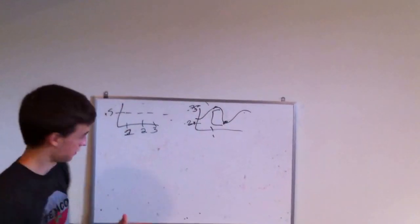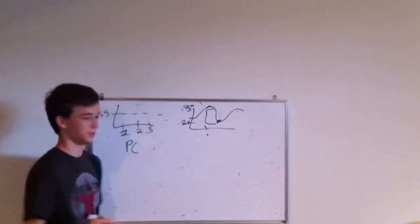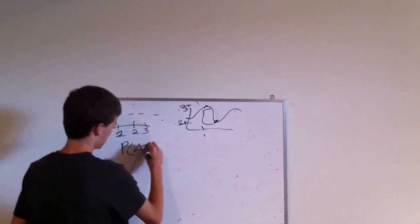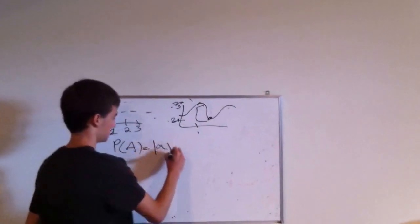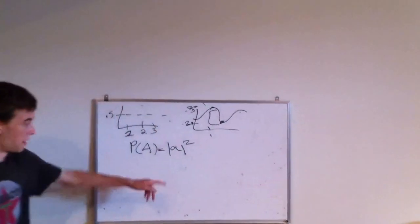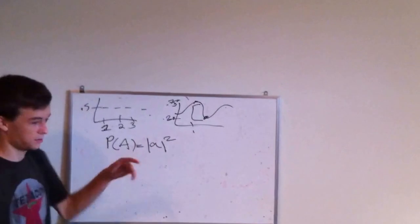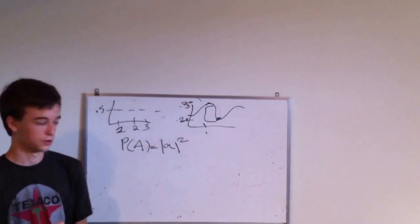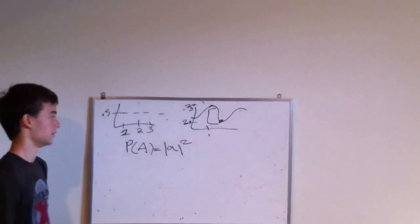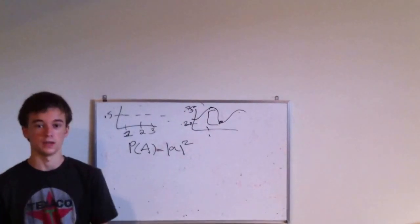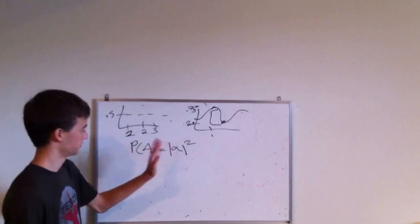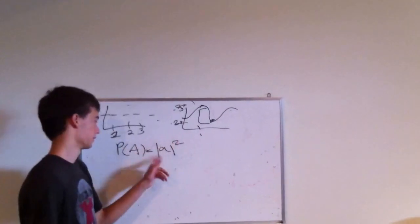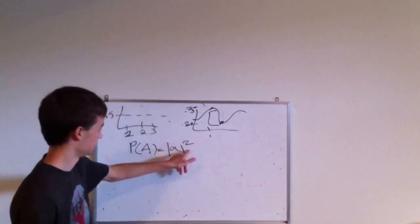So we're looking essentially for the difference between these two. Now how do you do that? So say you're looking for the probability of A, then you take the amplitude of A and you take, as they say in England, the mod squared, which is really just the absolute value squared. Now in case you don't know absolute value, it's just whatever the number is, but you make it positive regardless. So if it's negative 2, it's 2. If it's 2, it's 2. So regardless if it's negative 2 or 2, it would be 4.